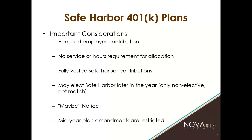You can elect safe harbor later in the year, but for the most part you have to make the decision at least one month, and preferably two months, before the end of the current year. If you're looking to go safe harbor for 2024, you need to make that decision in early November to get all the gears in motion, including notices sent to employees. Also, being a safe harbor plan restricts the types of changes you can make to the plan during the year, so you lose a little flexibility.